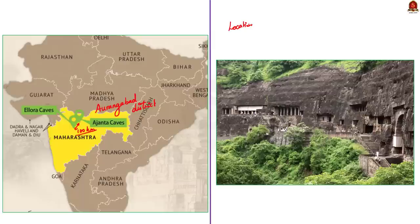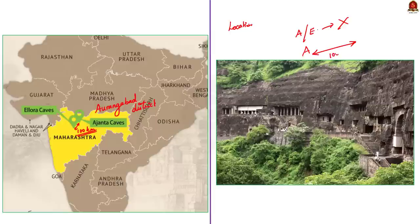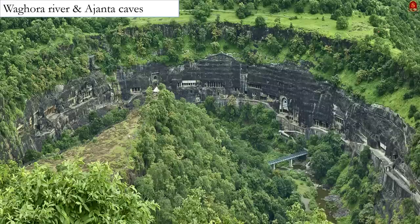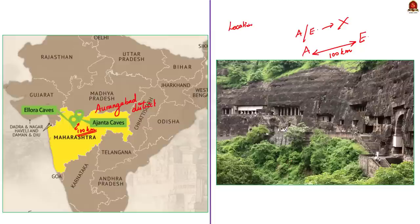If a statement comes in prelims saying that Ajanta and Ellora are adjacent cave systems located under the same rock complex, that statement is wrong. These are separate caves with a 100 kilometer gap between them. Note that Ajanta caves are located in the gorge of river Vagora. Both are located in Aurangabad district of Maharashtra but are two separate cave systems.